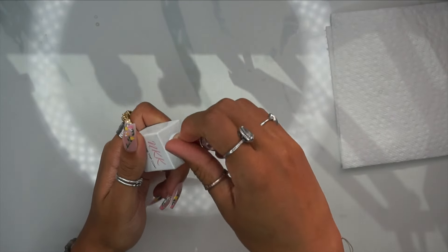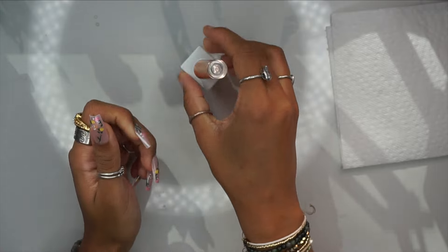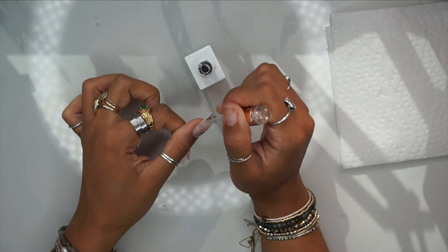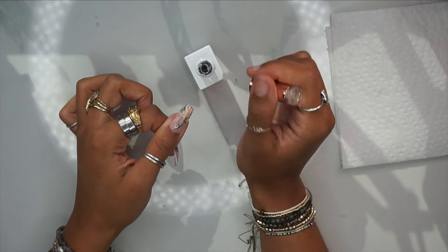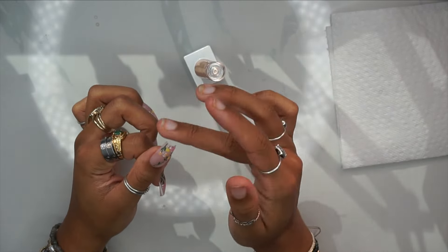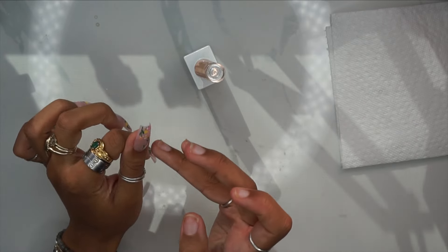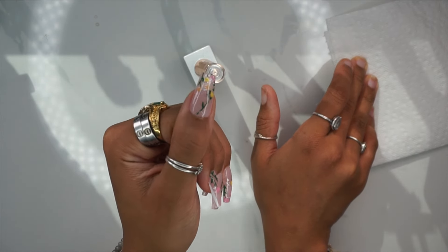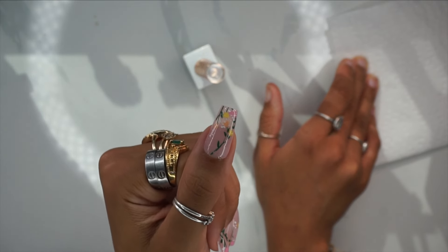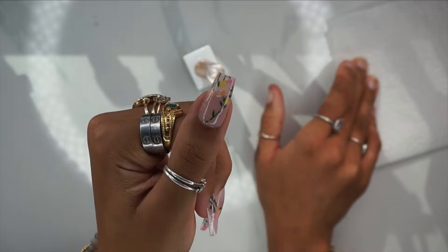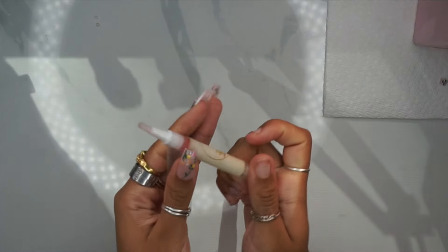But I do have this no-wipe top coat that has a slight shimmer glitter in it, and this one was my favorite. I absolutely love this. But you can get really creative with your top coat. You don't always just have to use a basic clear top coat. You can go with a matte top coat, the shimmery one, or different colors like a milky white or maybe even a translucent nude or a beige, and it'll really help elevate your nails and make it look like you truly stepped out of a nail salon.